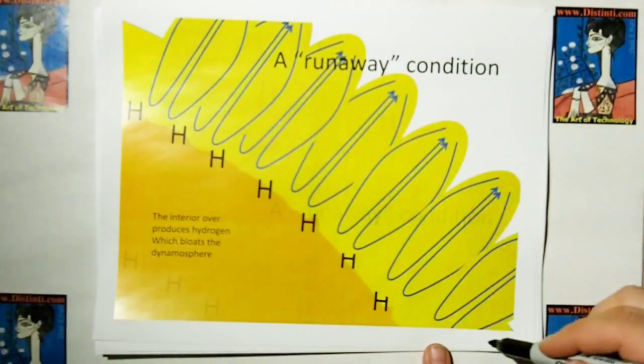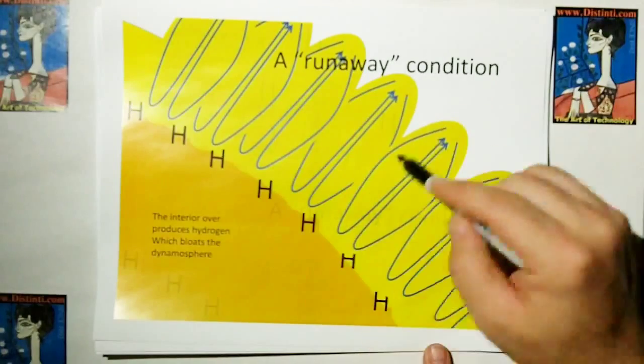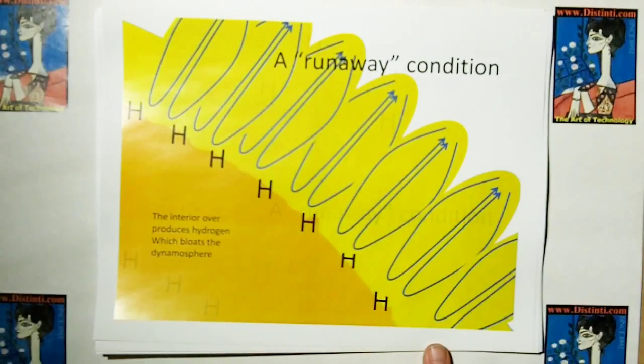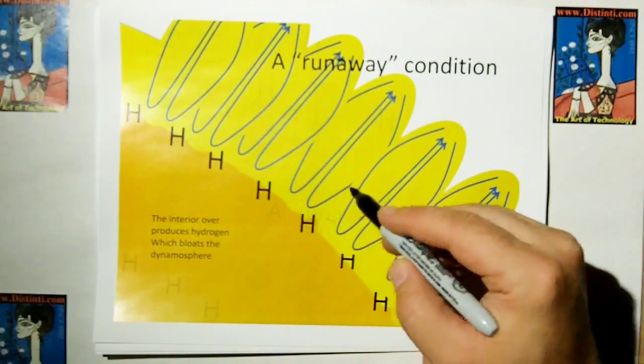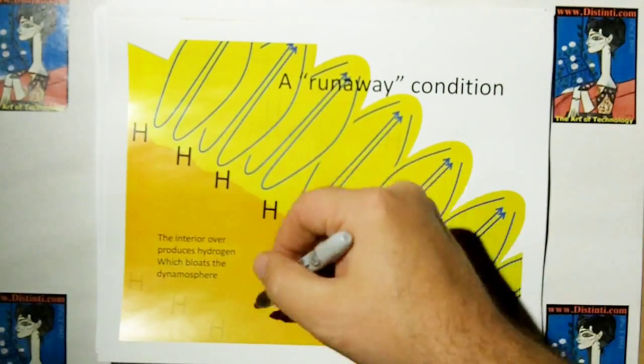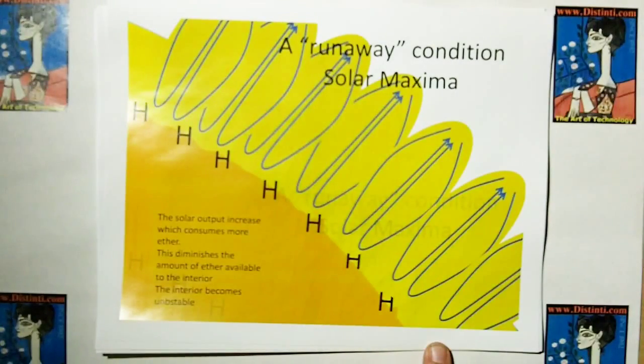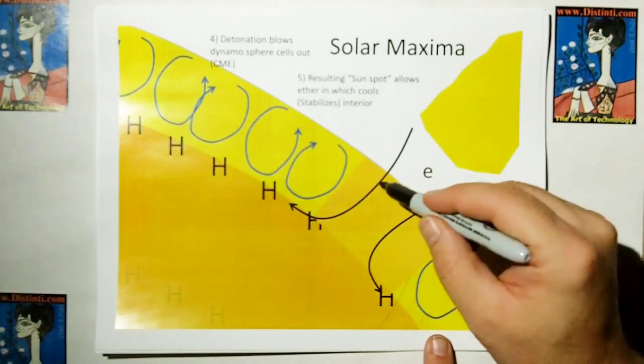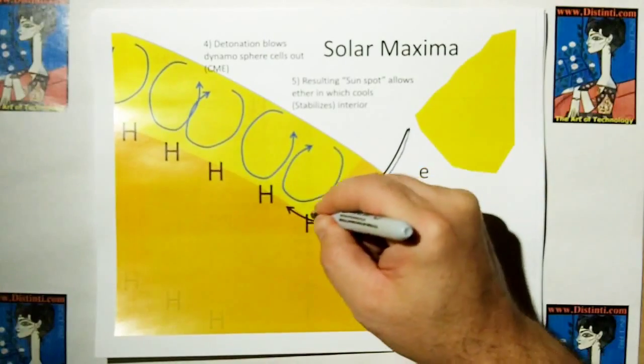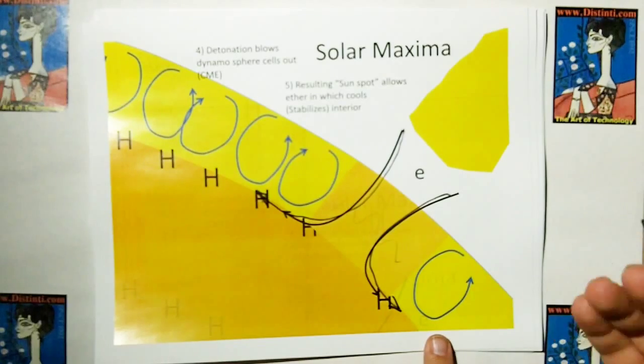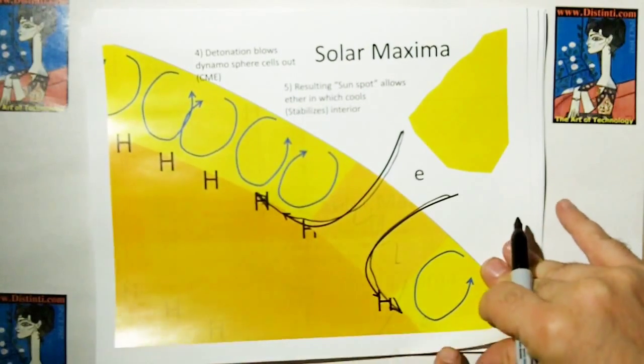But we can have a runaway condition, because as you pump more and more hydrogen into the dynamosphere, it becomes very thick, and it works at a much higher rate. I don't know if it's thicker, but it works at a much higher rate. And as it works at a much higher rate, it consumes more ether. As it consumes more ether, less ether is able to make it down to stabilize the interior of the Sun. So what happens is mantle material, I'm going to call it mantle material for lack of a better word, becomes unstable, and it'll blow off a section of the dynamosphere, creating a hole, which allows ether to flow in and stabilize the interior. This is the same way as manhole covers blowing off in Manhattan, releasing pressure.